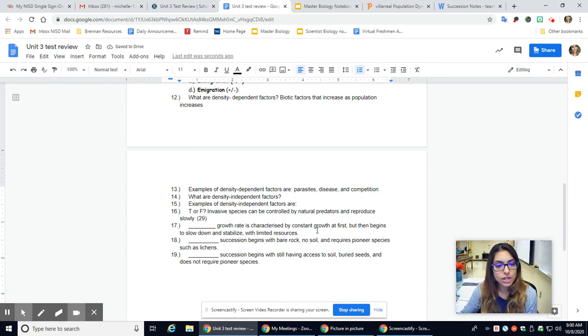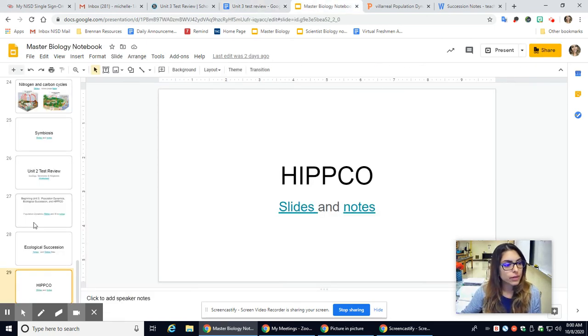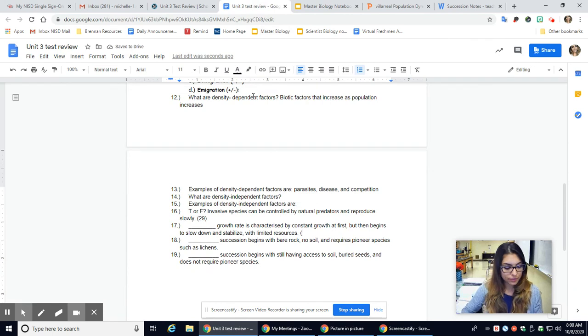Number 17. Growth rate is characterized. That's pop dynamics. Was that 27? There we go, 27. Blank type of growth rate is characterized by constant growth, but it begins to slow down. Stabilize means to become unchanged, so flatlining. And it has limited resources.